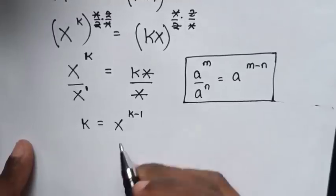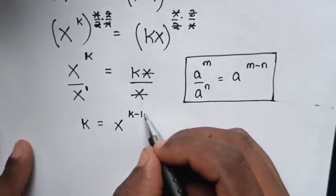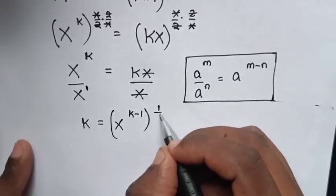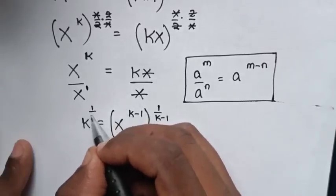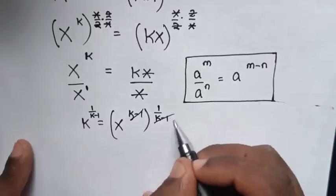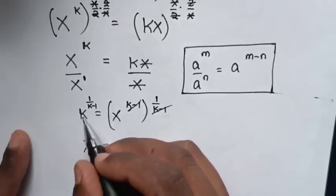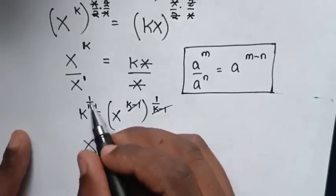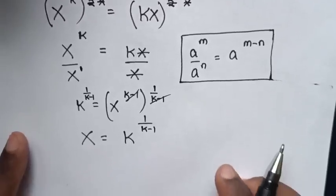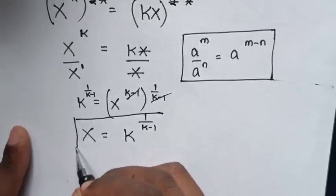So we already have the value of k. Now, to make x the subject, we multiply both sides by the power of 1/(k−1). This gives x = k^(1/(k−1)). This is the value of x in terms of k.